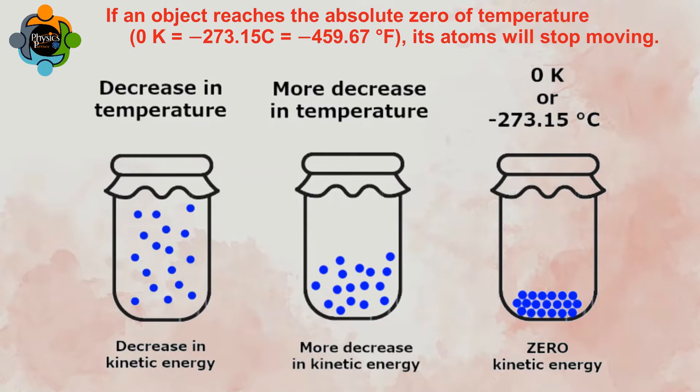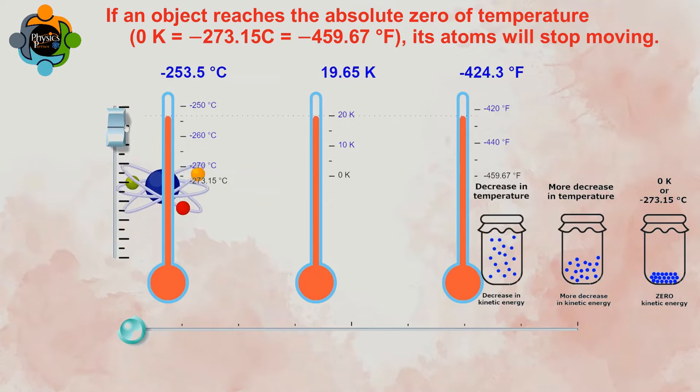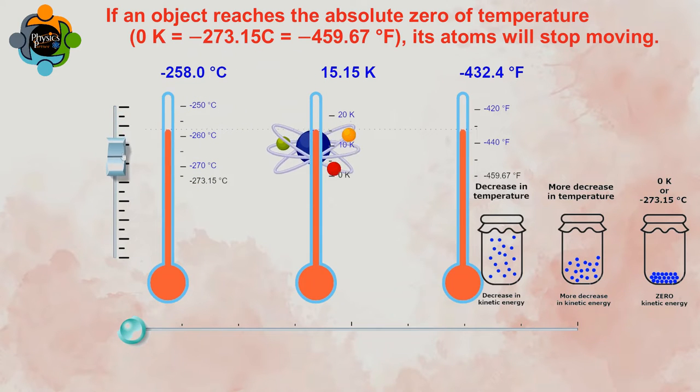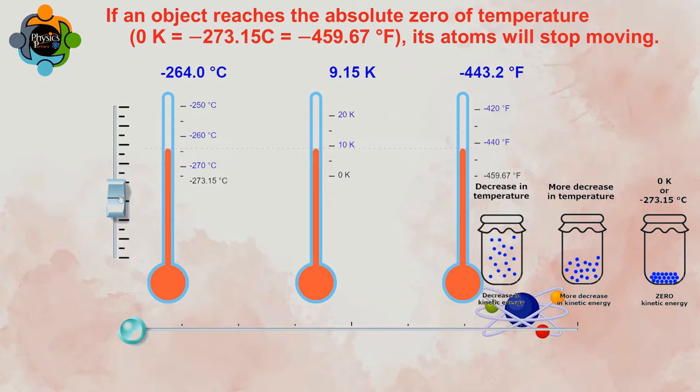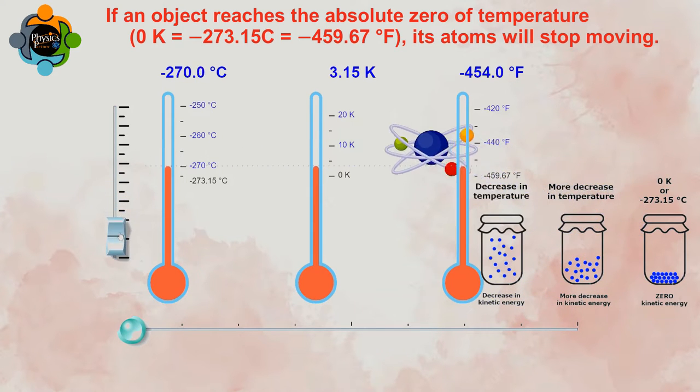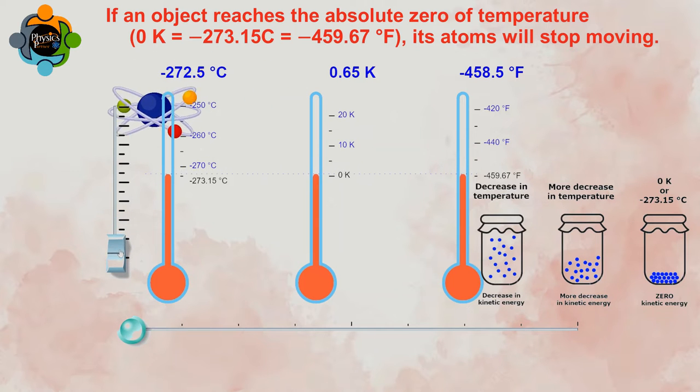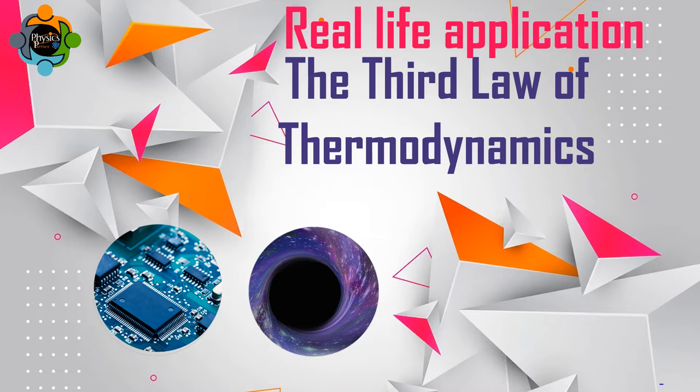In the simplest way, the third law of thermodynamics says if an object reaches the absolute zero of temperature, which is zero Kelvin or minus 273.14 degrees Celsius or minus 459.67 degrees Fahrenheit, its atoms will stop moving. But what does this law mean in terms of real-life applications?